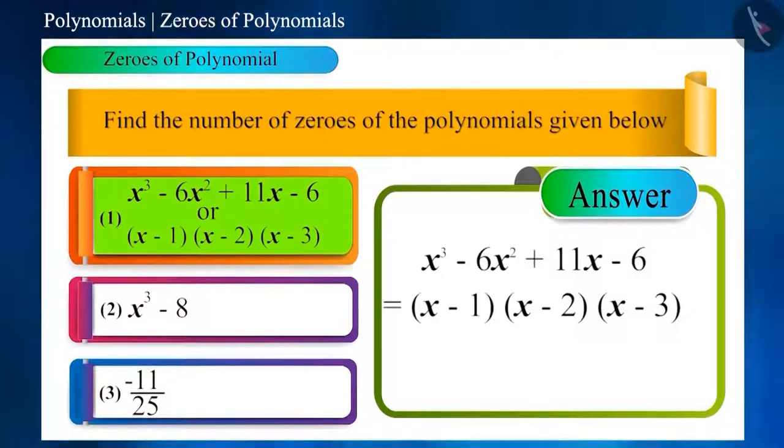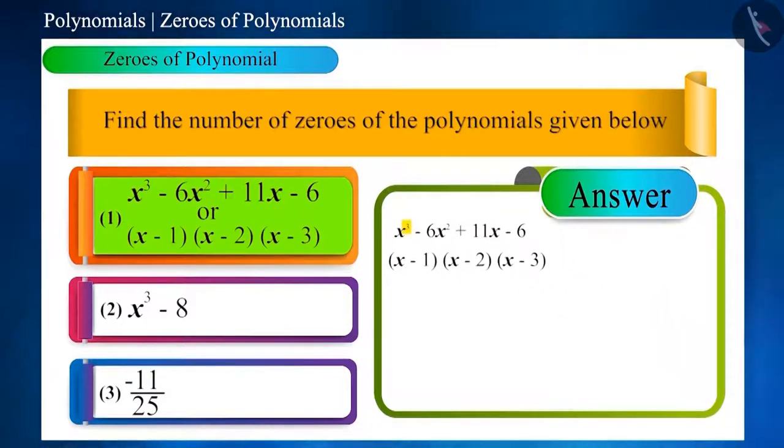We determine the number of zeros by the highest power of variable. For example, the highest power of variable of this polynomial is 3. So, this can have a minimum of 1, a maximum of 3 zeros.